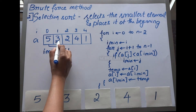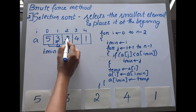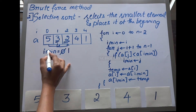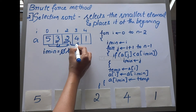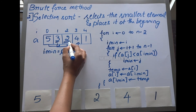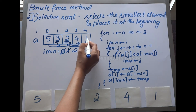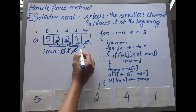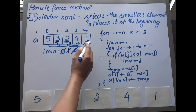Now it compares 3 with the next element 2. Since 2 is less than 3, 2 becomes the new minimum value and i_min becomes 2. Next, 2 is compared with 4 — not less, so i_min stays the same. Then 2 is compared with 1, and since 1 is less than 2, the new minimum value is 1 and i_min becomes 4. We have now reached the end of the list.